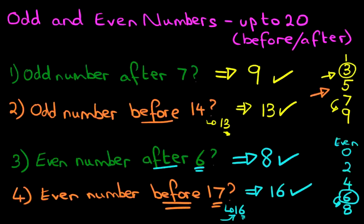So that is how we work out odd and even numbers up to 20 with odd and even numbers before and after.